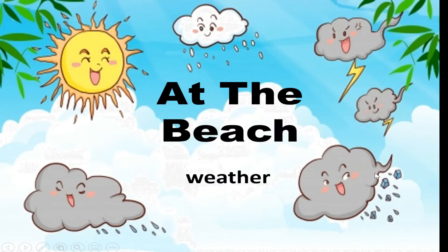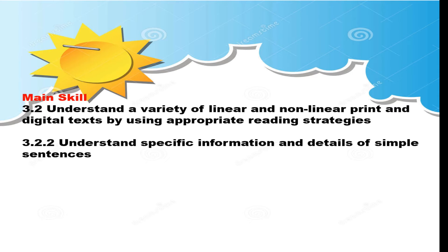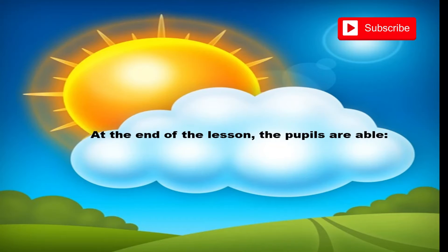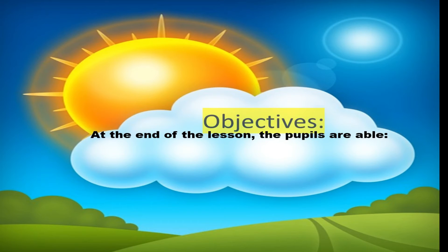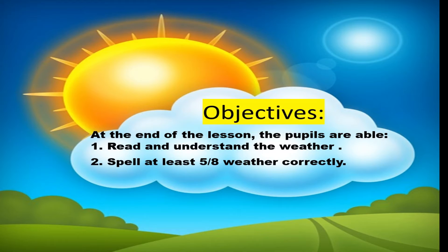Hello class, today we'll enter Unit 9: At the Beach. In this lesson we'll learn about the weather. The main skill and complementary skill for today focus on reading and writing. The objective is that at the end of the lesson, students are able to read and understand weather vocabulary and spell the weather words correctly.